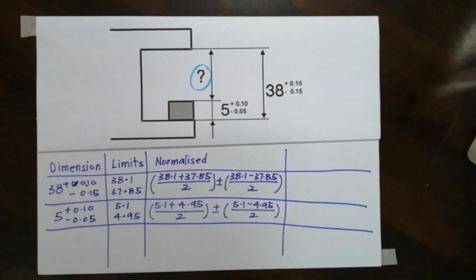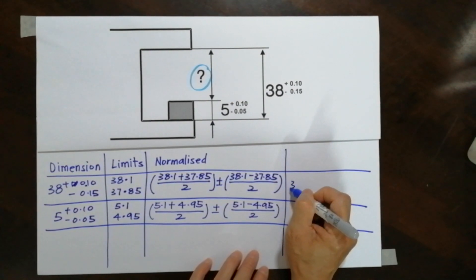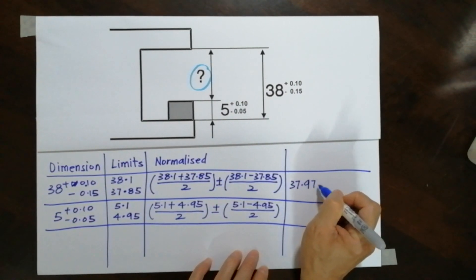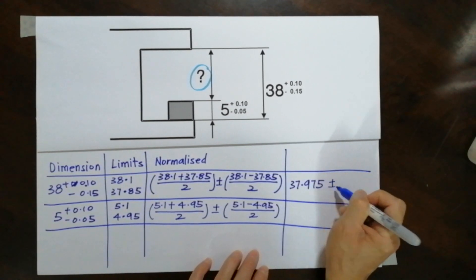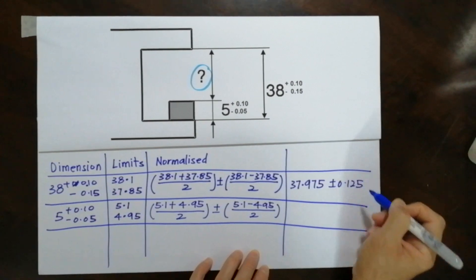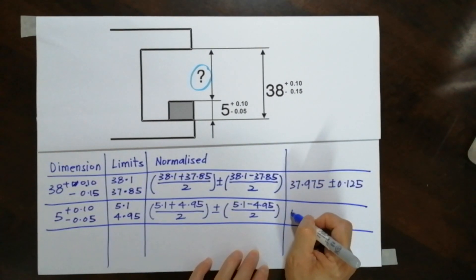Combining that, here I will have 37.975 plus and minus 0.125, and this will be 5.025 plus and minus 0.075.